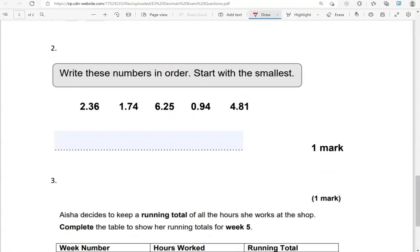Write these numbers in order. Start with the smallest. We've got 2.36, 1.74, 6.25, 0.94, 4.81. So, they all have one digit before the decimal point and they have two digits after the decimal point. The digit that has the highest value is the digit before the decimal point. So, if it was money, that would be the pounds. So this is 2. This is 1. This is 6. This is 0. And this is 4.